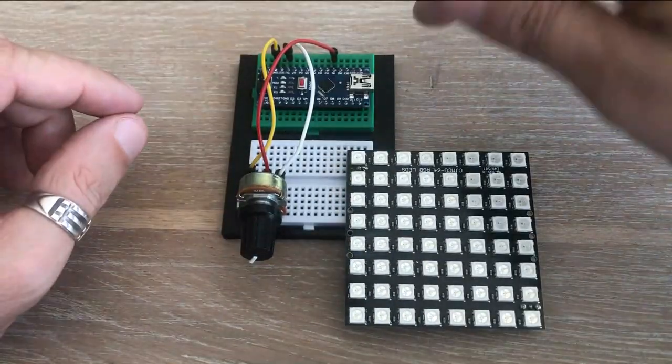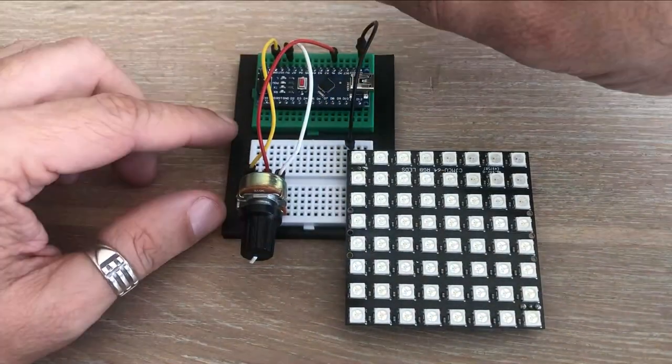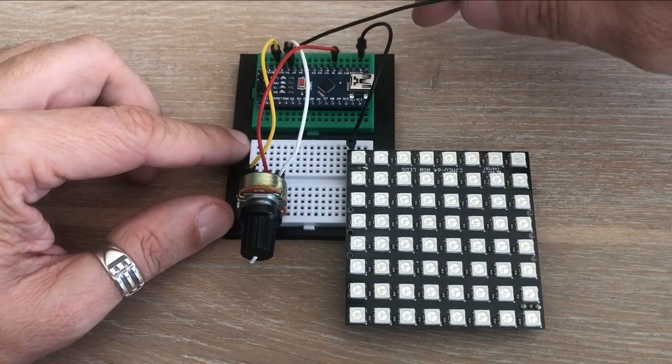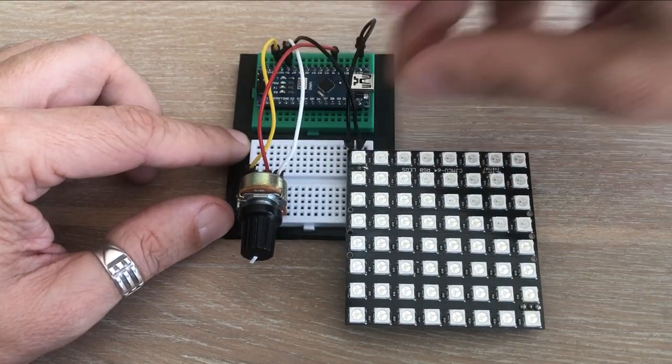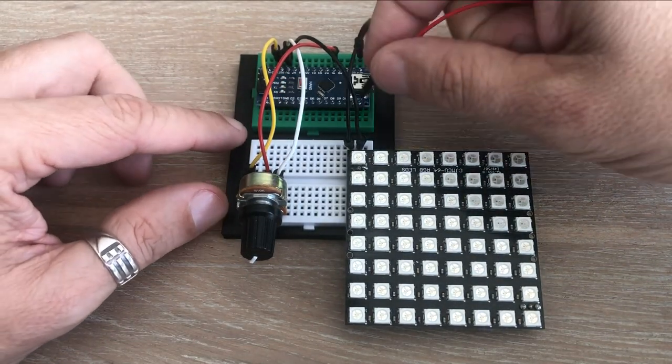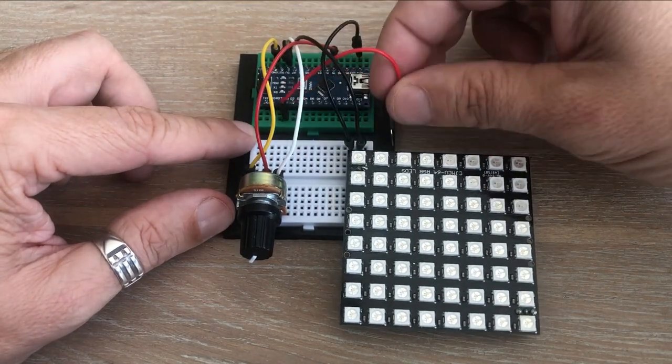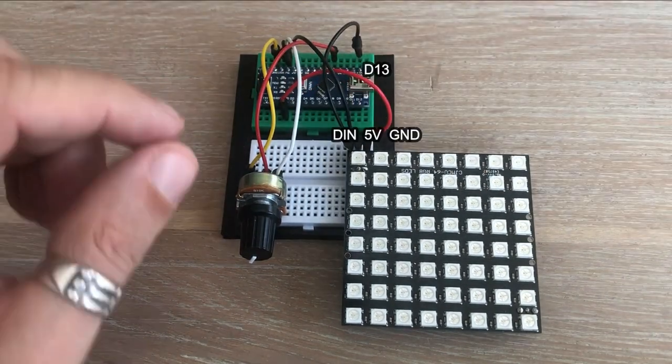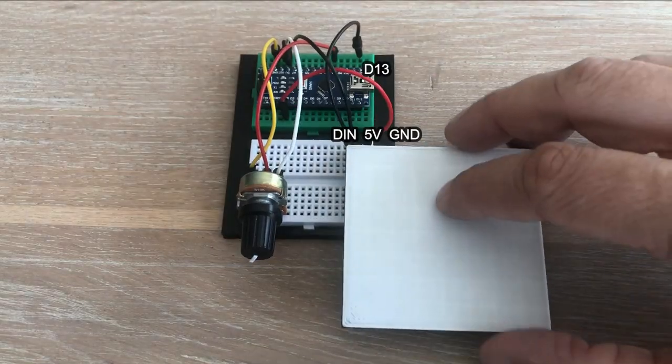Now let's add LED matrix to our setup. We need to power it and the data in pin would go to Arduino digital pin 13. Let's adjust the code so we can control with a pot which LED in this 8x8 matrix is lit.